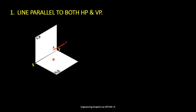This means the line is parallel to the horizontal plane and parallel to the vertical plane. Both end points A and B are at equal perpendicular distances from VP and equal distances from HP.